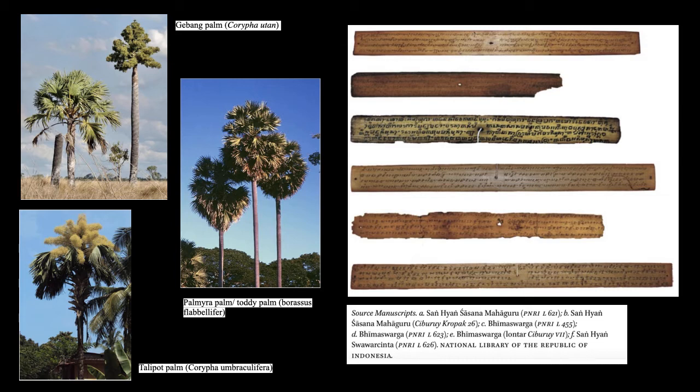To make a palm leaf manuscript, fresh leaves are collected and dried from palm trees, then boiled in water or milk. They are buried in wet sand for about three months to give them softness, then dried again and a type of oil is applied to create a smooth surface. Finally, the surface is smoothed once more with a polished stone or conch shell.